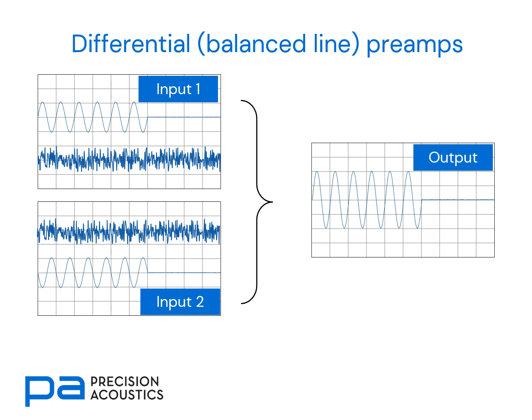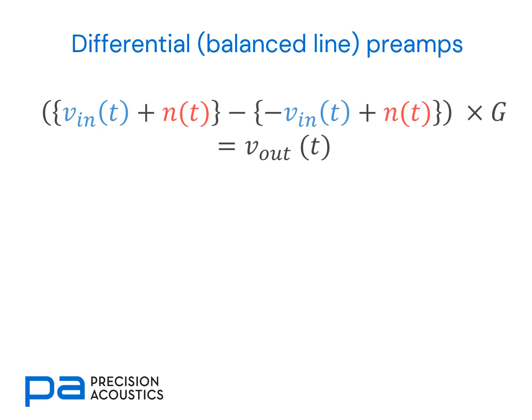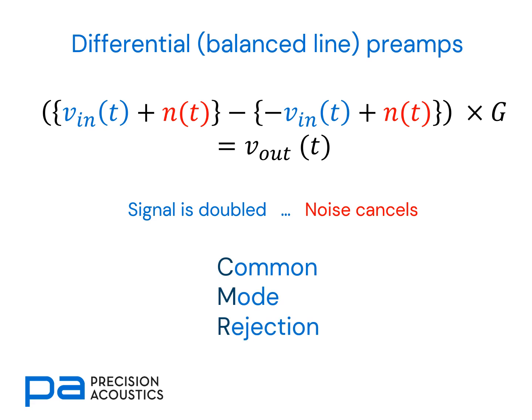If we look at the equation basis for this, we can see how this happens. The noise signal is additive for both channels. However, because of the double negative — the fact that we are subtracting from something that is already phase inverted with the voltage signals — we effectively double the input voltage, whereas it is a simple subtraction of the noise on both sides. Therefore, the signal is effectively doubled whereas noise cancels. We've been able to exploit common mode rejection, and this is one of the significant benefits of differential preamplifiers.